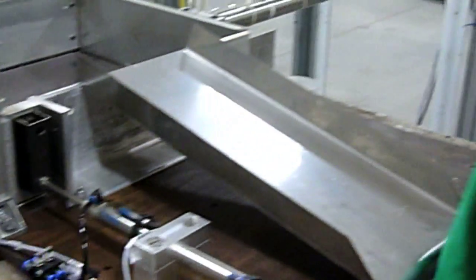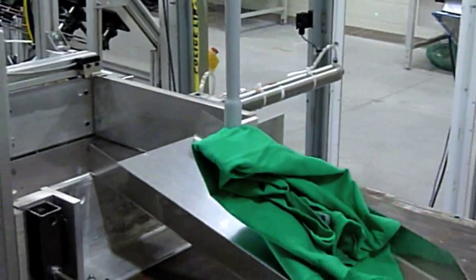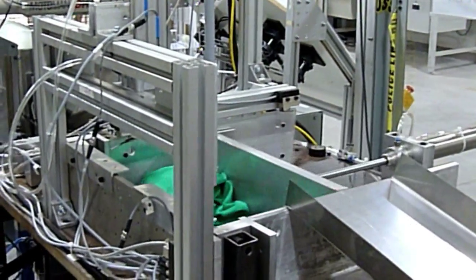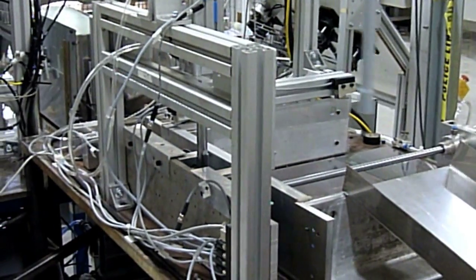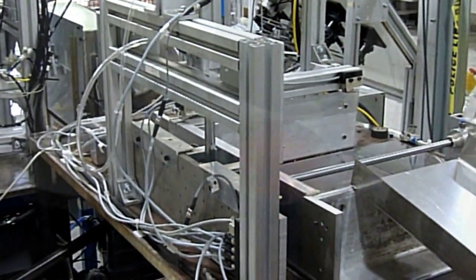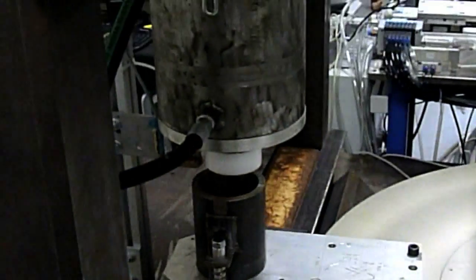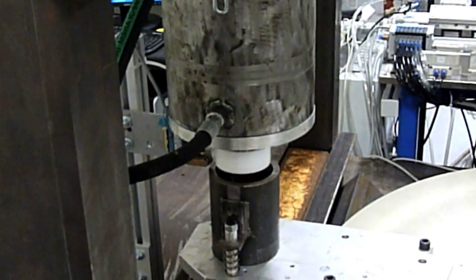The camera now sends its OK to index instruction to the indexing table while it waits for the consolidation station to complete its cycle of the next shirt. When both stations have completed their task, the table will index to the third position, the compression station.